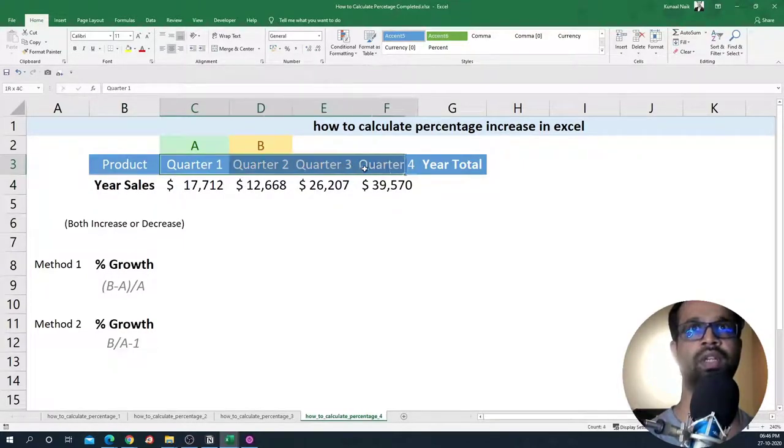Now when I have the quarter over quarter sales information, obviously I want to know whether I have increased from quarter one to quarter two sales, quarter two to quarter three sales, quarter three to quarter four sales. That's where we have the opportunity to calculate percentages increase or decrease within Excel.